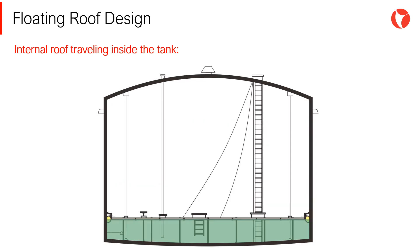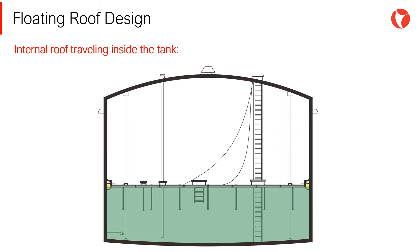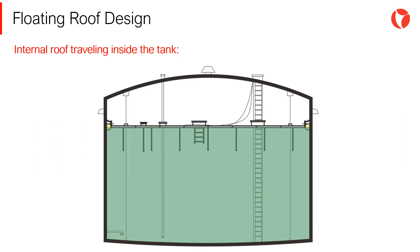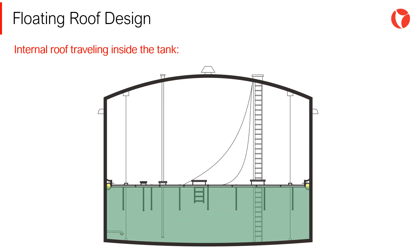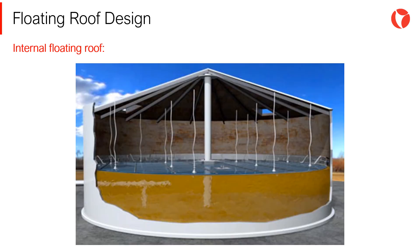The net capacity of the tank is limited by the total distance that the roof can travel within the tank. The lower limit depends on the arrangement of the tank in terms of internal pipes and connections penetrating the tank wall. Internal floating roofs can directly rest on the stored product, so there is no vapor space between the roof and the product. The free space above the floating roof must be adequately vented to the atmosphere to avoid the accumulation of potentially explosive gases.